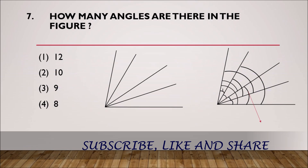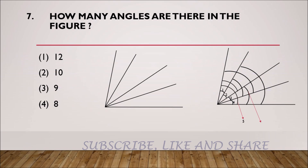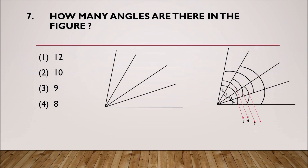Here is the explanation. We have the 1st angle, 2nd, 3rd, 4th, 5th which is the biggest angle, 6th, 7th, 8th, 9th, and 10th. So there are 10 angles in total. The second option, 10 angles, is correct.